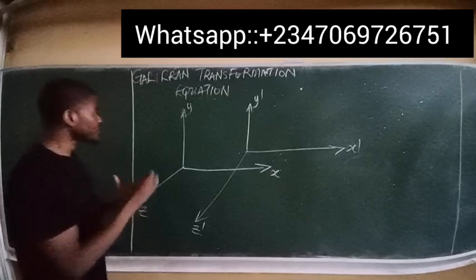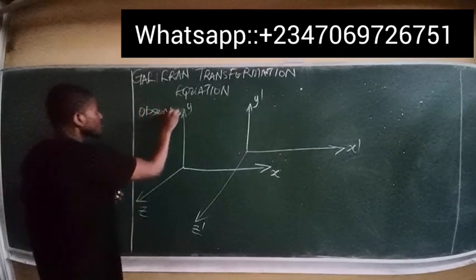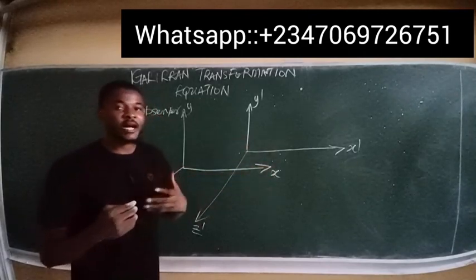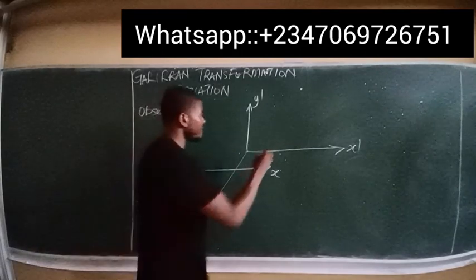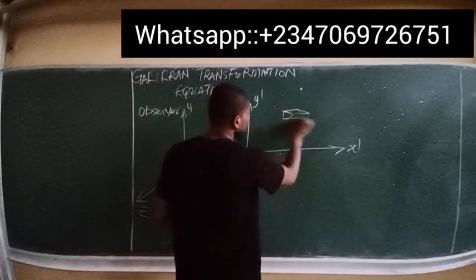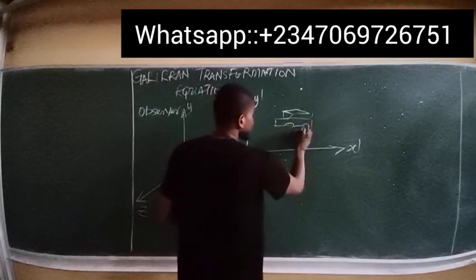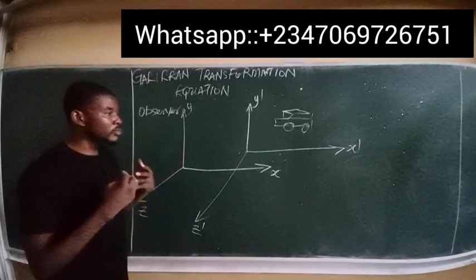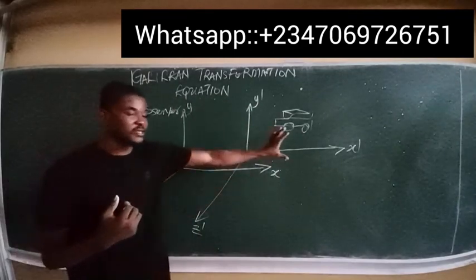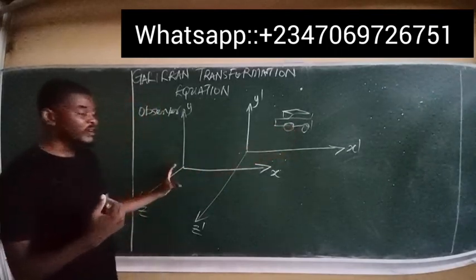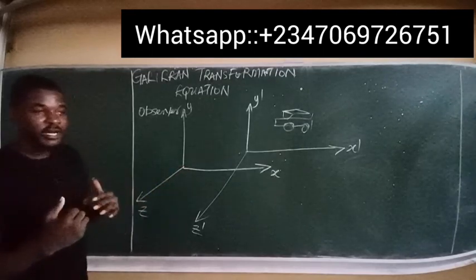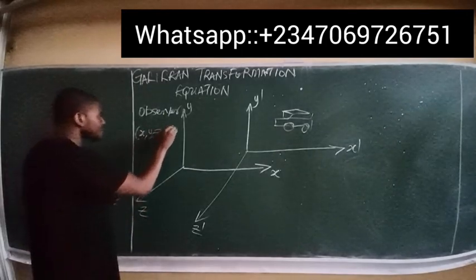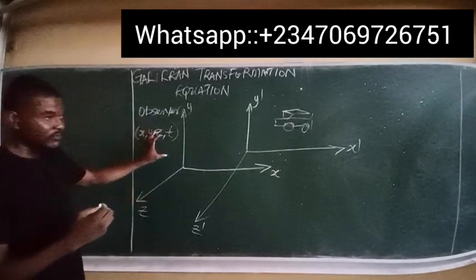The first reference frame always represents the reference frame of the observer, while the second reference frame is where an event is taking place. For example, consider a vehicle traveling in the x-direction in the second reference frame, with an observer in the first reference frame. The coordinates of the observer in the first reference frame are four-dimensional: x, y, z, and t.